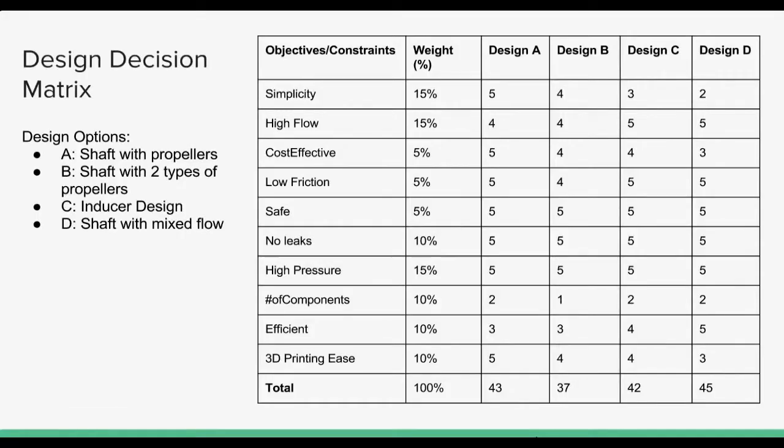This is our design decision matrix slide. We have four designs that we were thinking about doing. Design A was the shaft with propellers, and design D was the shaft with two different types of propellers. Design C was our inducer design, and design D was our shaft with mixed flow design.